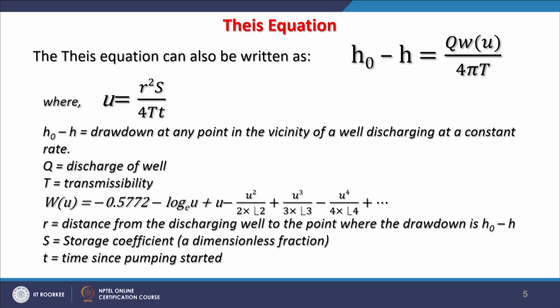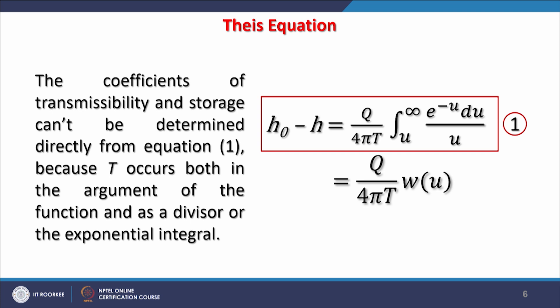This w(u) can be written as -0.5772 - ln(u) + u - u²/2×2! + u³/3×3! + ... and so on in this series. r is the distance from the discharging well, S is the storage coefficient, and t is the time since pumping started. When we put all these values, we get information about how much drawdown has occurred.